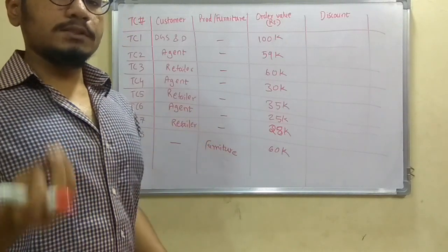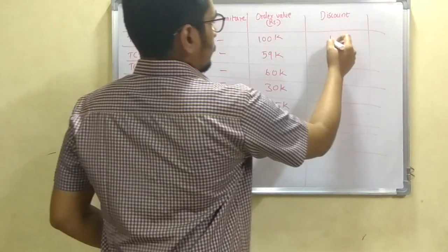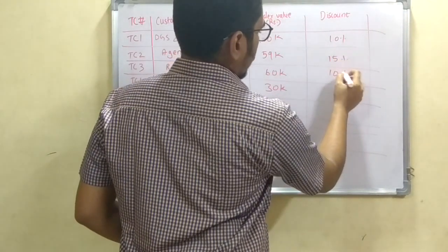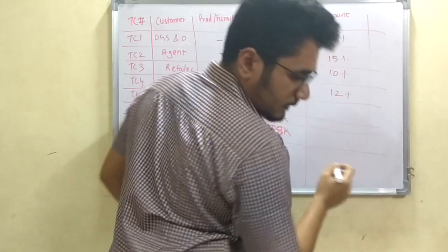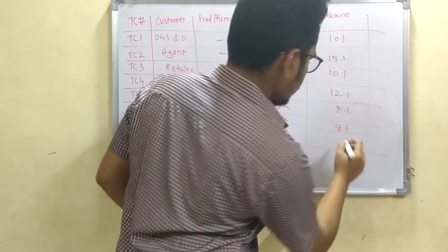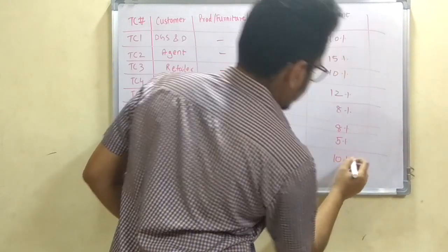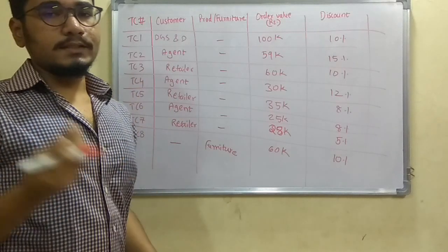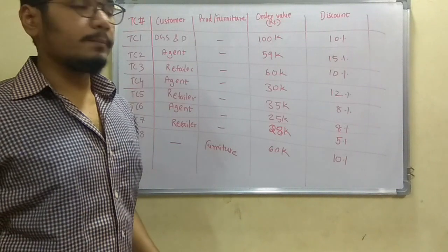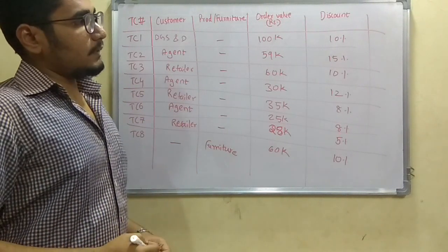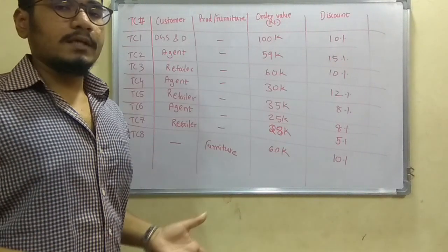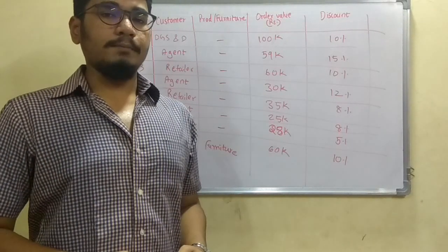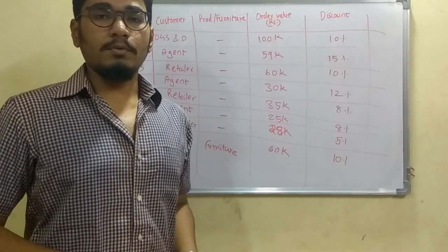The discount outputs mapped from the decision table are: 10%, 15%, 10%, 12%, 8%, 5%, 5%, and 10%. This completes the test case design using decision table testing. In the condition and action steps we used three variables: true, false, and indeterminate. This is all about decision table testing in software testing and quality assurance. Hope you enjoyed this video — please hit like, subscribe, and put any queries in the comment box below.